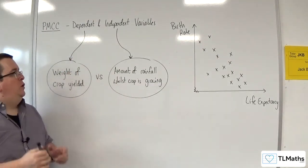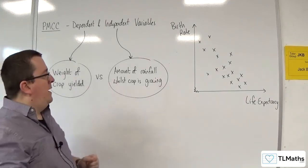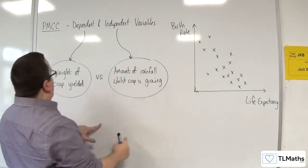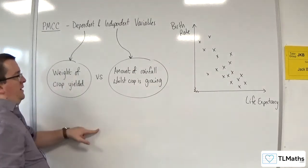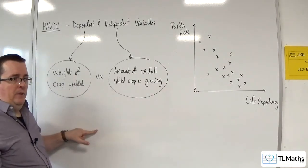You would plot amount of rainfall along the horizontal axis and the weight of the crop yielded on the vertical axis.